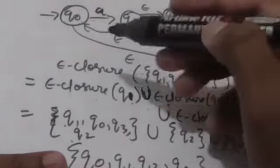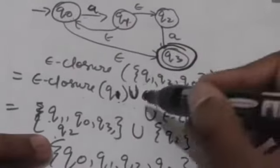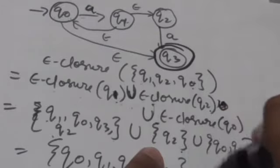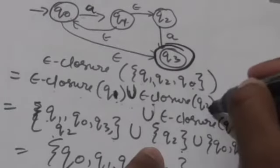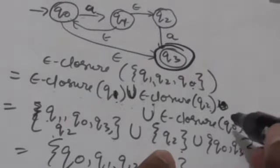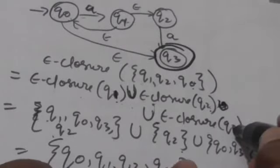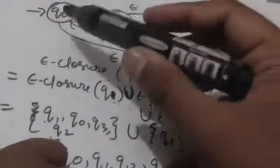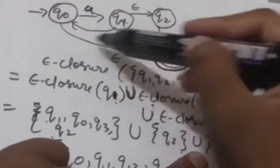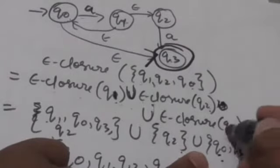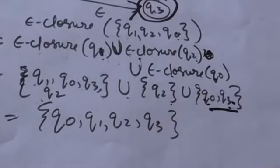So q0, q1, q2, and q3 are all in ε-closure(q1). Now, ε-closure(q2) will be a set having only one state, q2, because from q2 there is no empty transition. The ε-closure(q0) will be a set having two states, q0 and q3, because from q0 there is an empty transition to q3.